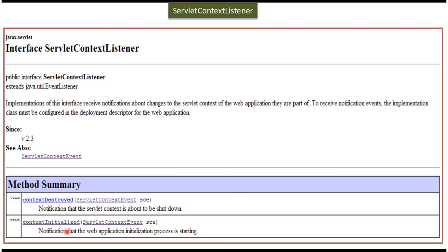Whenever the context is created or initialized, the contextInitialized method will be called, and this method will receive the ServletContextEvent. Whenever the context is destroyed, the contextDestroyed method will be called, and it will also receive the ServletContextEvent.